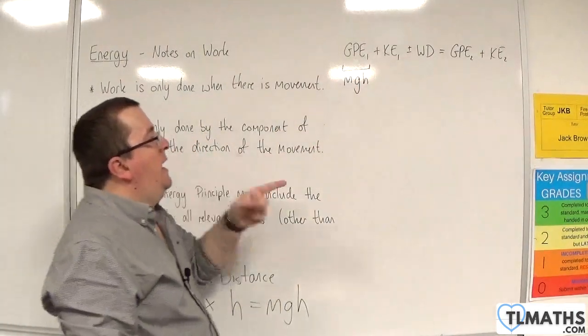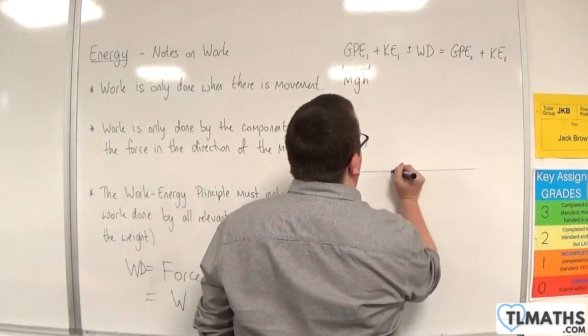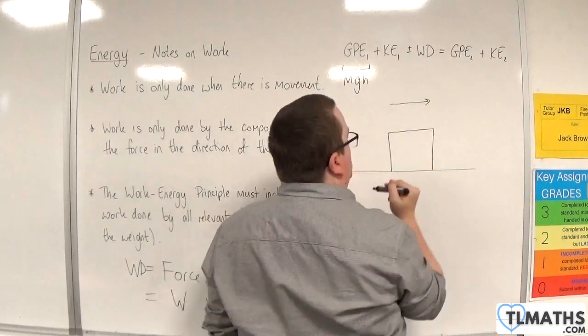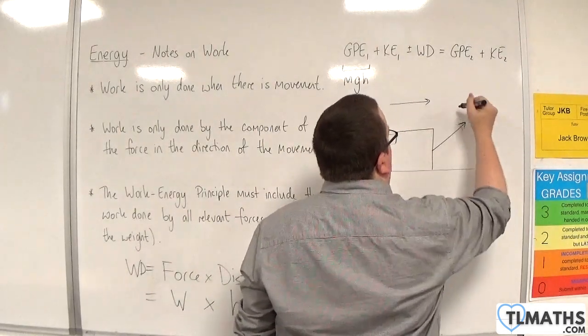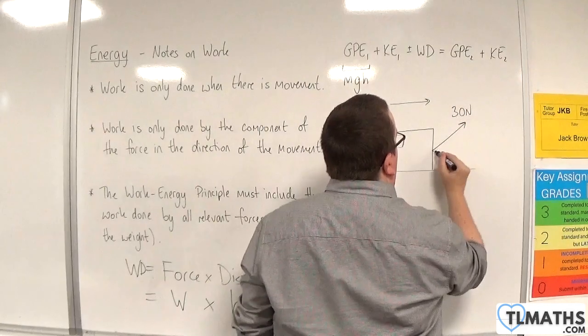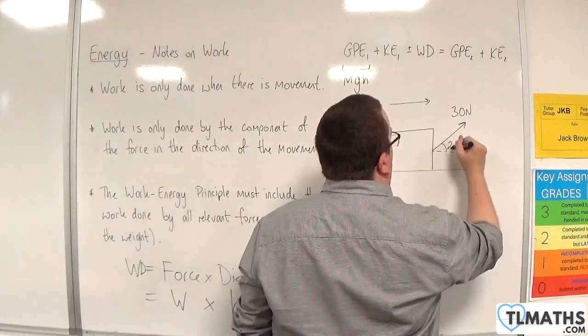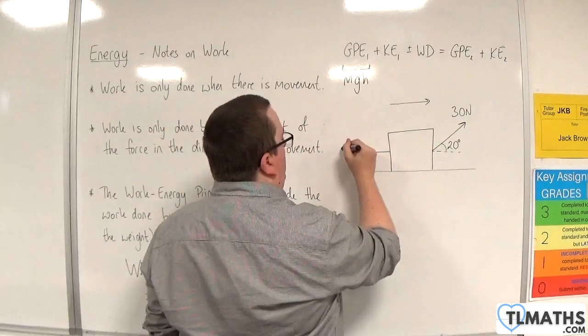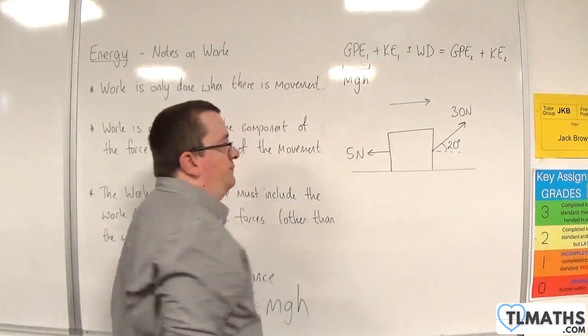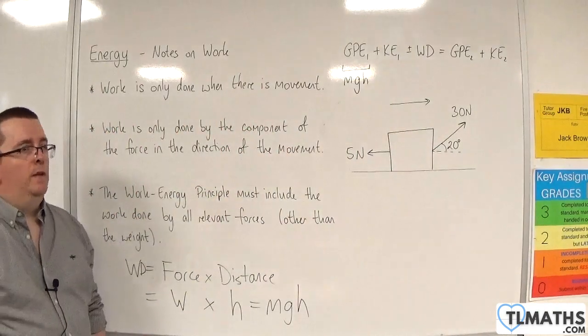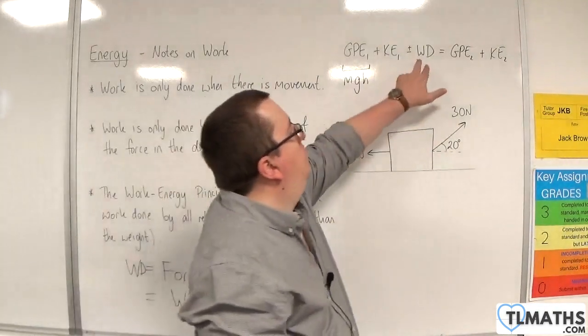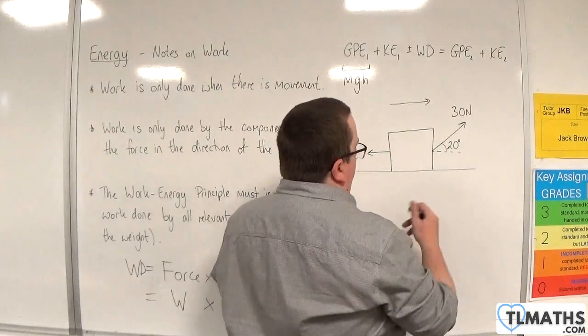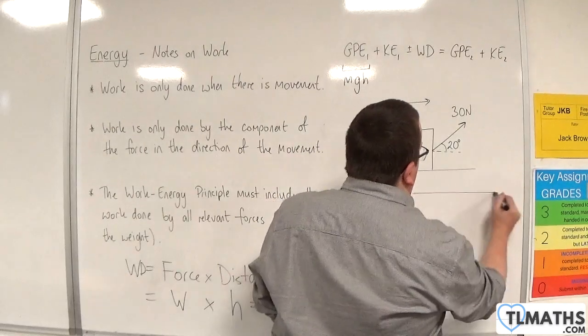Now if for example we had a block that was being pulled horizontally by a force, let's say 30 newtons at an angle of 20 degrees, and let's say that there's a frictional force as well of 5 newtons, then when we talk about the work done, let's say it's over 10 meters, so it travels 10 meters.